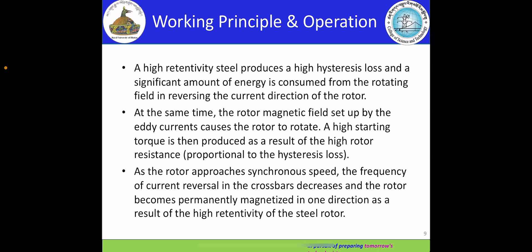A high retentivity steel produces a high hysteresis loss, and a significant amount of energy is consumed from the rotating field in reversing the current direction of the rotor. At the same time, the rotor magnetic field set up by the eddy currents causes the rotor to rotate. A high starting torque is then produced as a result of the high rotor resistance, which is proportional to the loss created by the hysteresis effect.